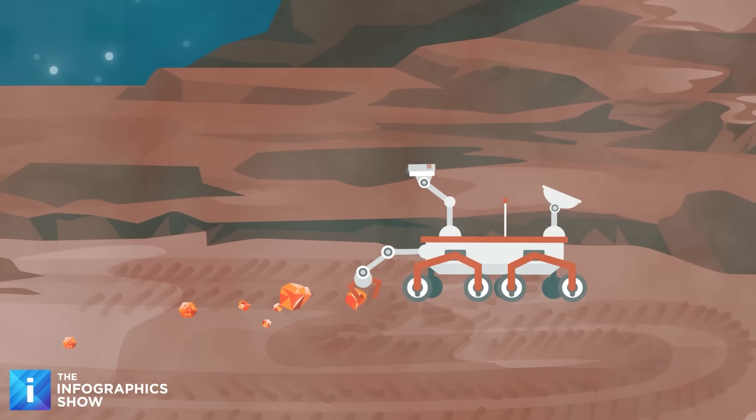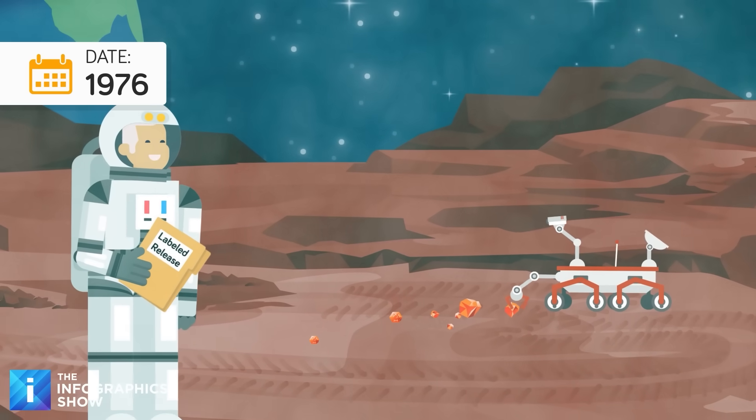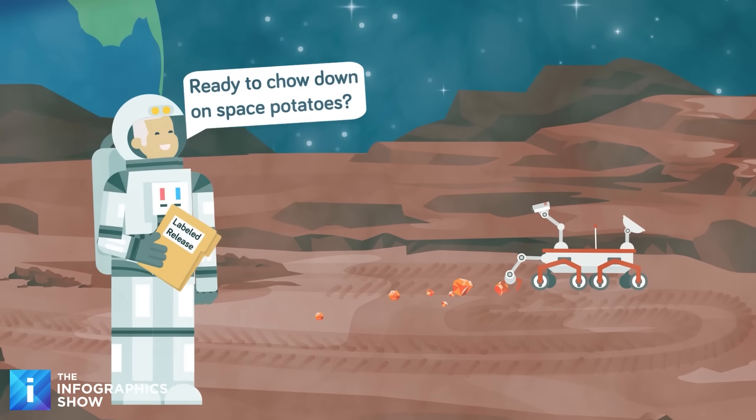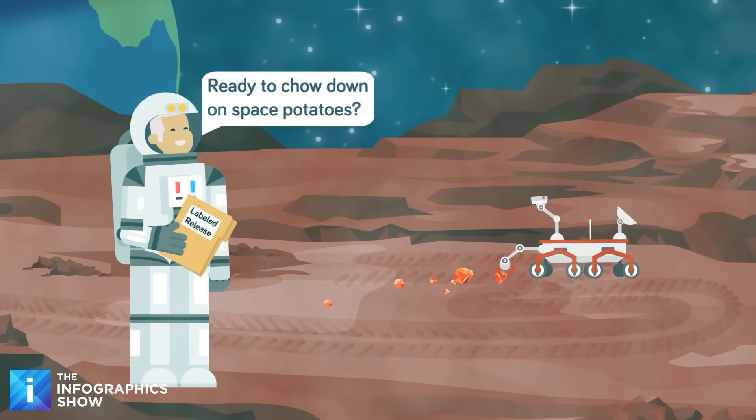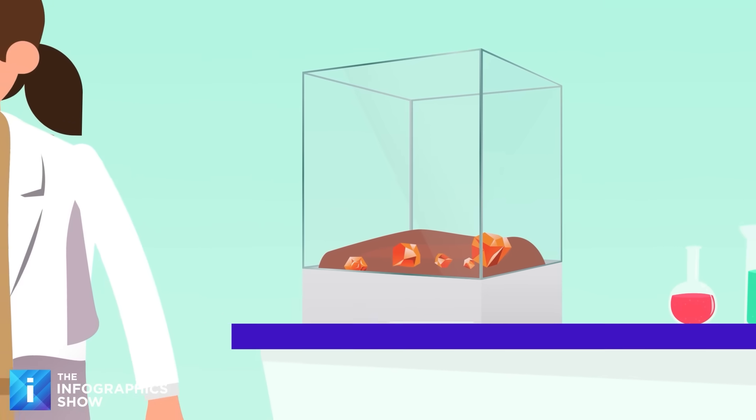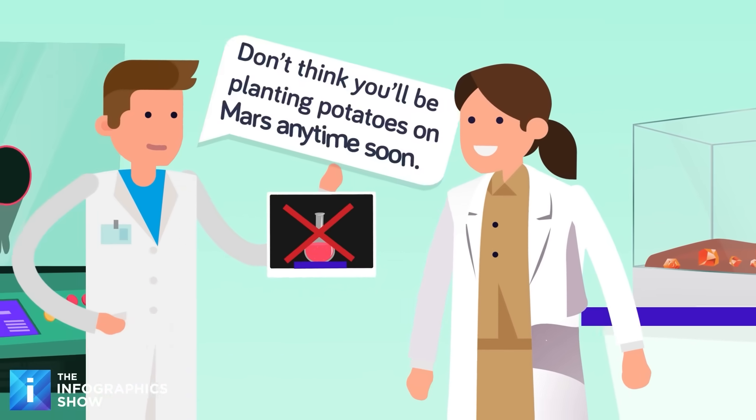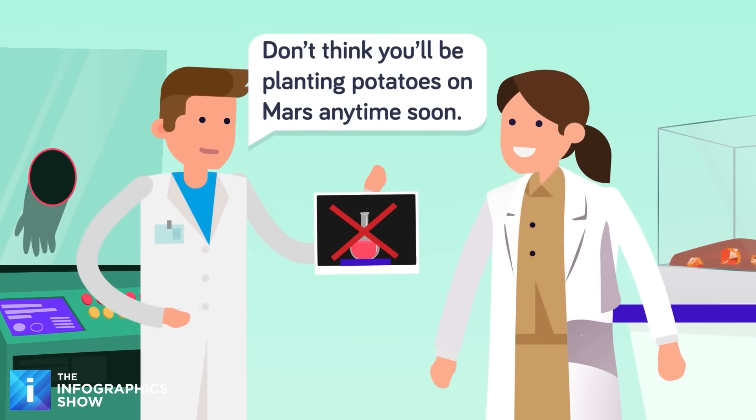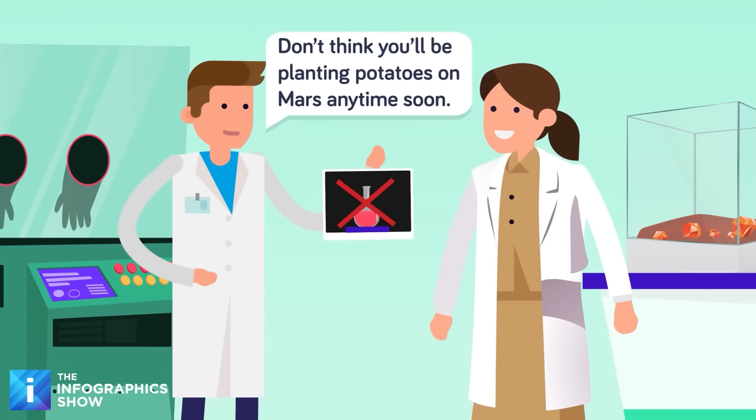Although later and more powerful telescopes revealed these canals were optical illusions or natural features, NASA's Viking landers conducted several biology experiments on the Martian surface in 1976. The labeled release experiment, designed by Gilbert Levin, yielded results that were interpreted by him as evidence of metabolism by microbial life in the Martian soil. However, the scientific consensus leaned toward non-biological chemical reactions as the more likely explanation, especially given the lack of detected organic molecules by other Viking instruments. But this remains a debated topic.